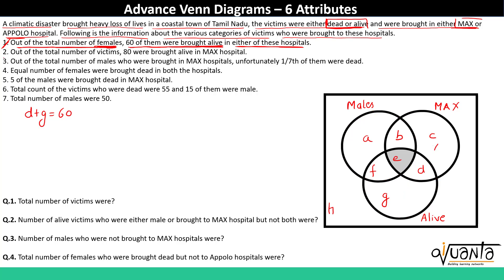The second statement: out of the total number of victims, 80 were brought alive in Max hospital. So we concentrate on the area belonging to both alive and Max. The circle of alive and the circle of Max share the common region E plus D. So E plus D equals 80.